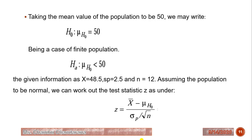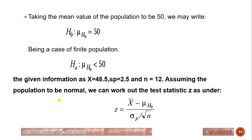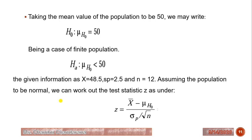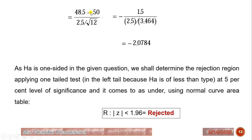The alternative hypothesis is that the mean is less than 50 (one-sided). The given information is: sample mean equals 48.5, population standard deviation equals 2.5, and sample size is 12. Since the population size is not given, we apply the first formula. Substituting the values, we get a Z value of minus 2.08. Since the alternative hypothesis is one-sided, we apply a one-tail test.